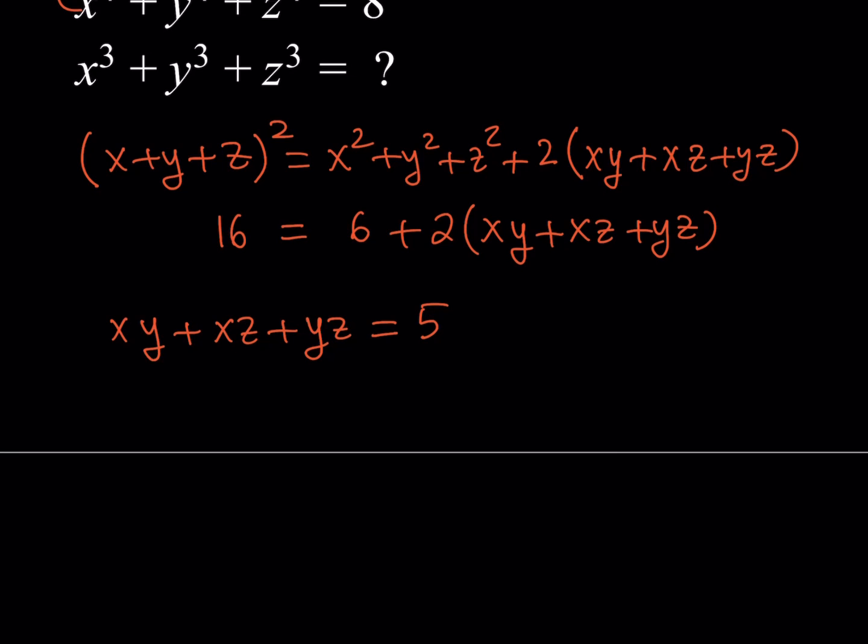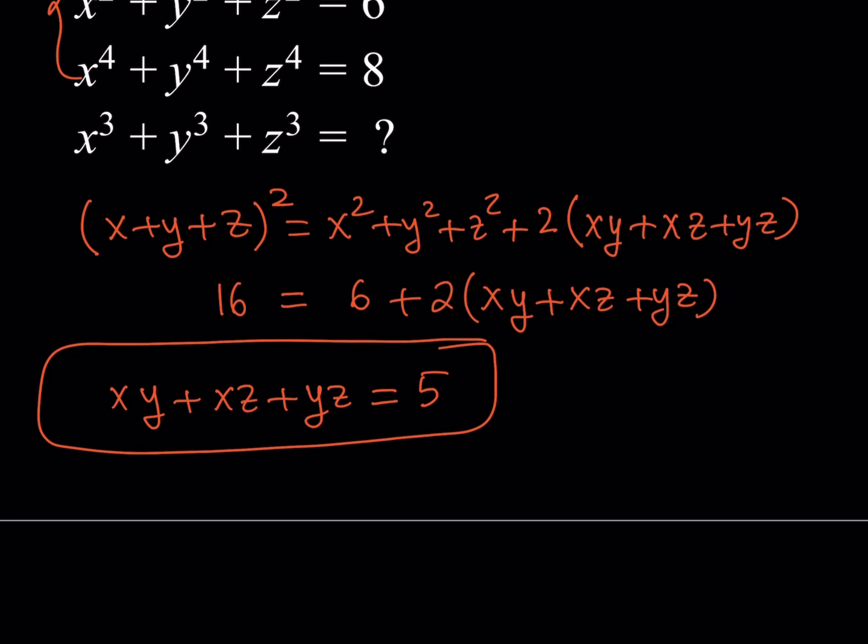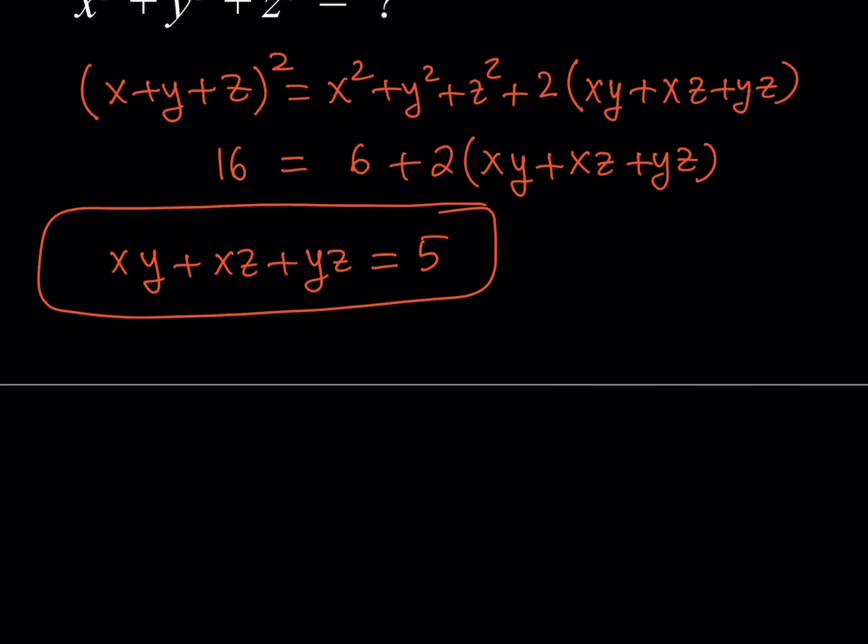This also goes along well with the Vieta's formulas. Remember we had a video on Vieta's formulas which I'm going to link in the description below. This is basically the two-way products of the roots. So I have this now and I have x plus y plus z and everything else. Now notice that we also have x to the fourth plus y to the fourth plus z to the fourth. So that kind of tells me something. It tells me to square this expression here.